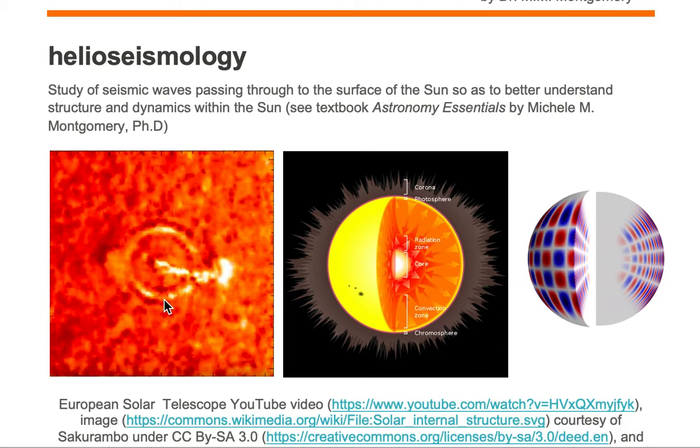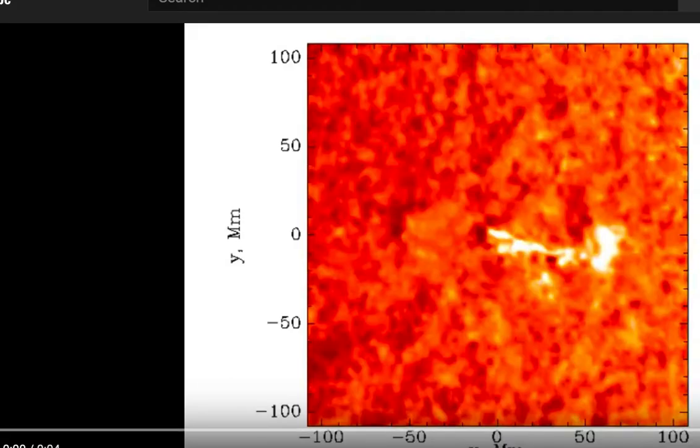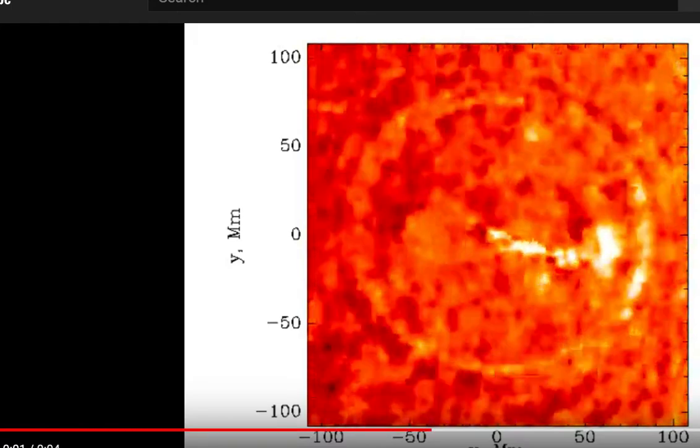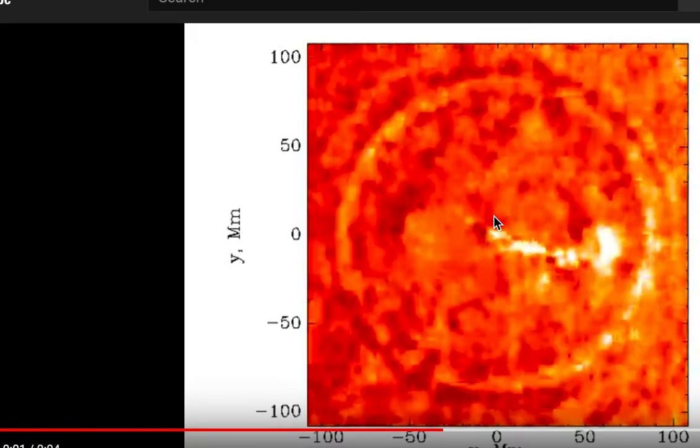So let's start with some observations. Let's go to the European Space Telescope and take a look at a seismic event, which is like an earthquake on Earth, but we're looking at a sun quake on the sun.